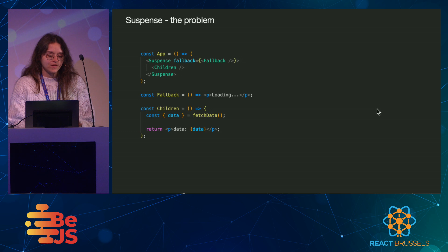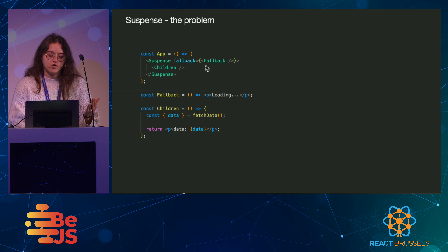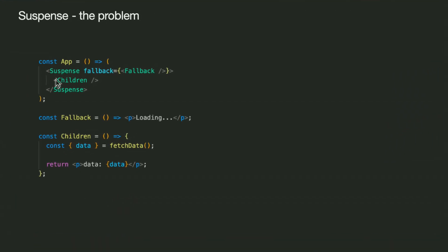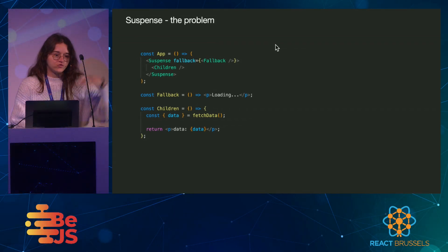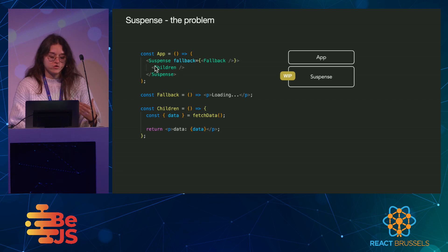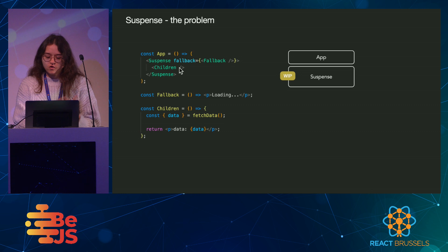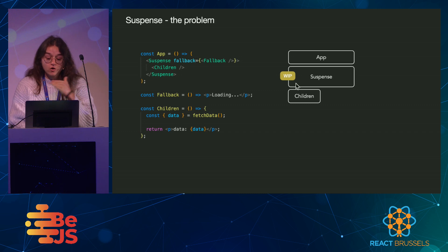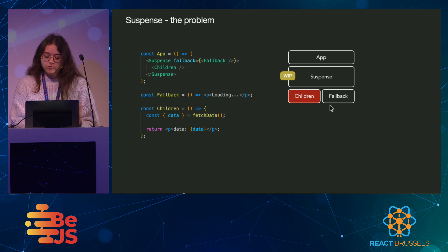So: suspense. The job of suspense is to either display the children or a fallback, depending on whether a query is happening down there below. But knowing that React renders our components going through this tree from top to bottom, by the time suspense has to make a decision about which one to display — the children or the fallback — the children have not been rendered yet. So the query has not happened yet. So how does suspense know a query is going to happen in the children, and that it should display a fallback instead?